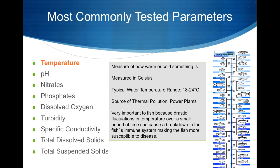Temperature is a measure of how cool or warm the water is. Typical range of surface water temperatures during the summer sampling season is 18 to 24 degrees Celsius. The most likely source of thermal pollution is through power plant discharge. Rapid fluctuations in temperature can be harmful to most aquatic organisms and make fish susceptible to disease.